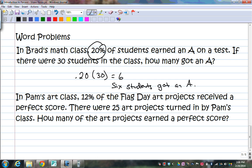All right. Now, in Pam's class, 12% of Flag Day Art Projects received a perfect score. There are 25 students in that class or 25 projects. So, how many of them received a perfect score? I would change this to a decimal and times 25. And then I would get 3. And I would say, 3 projects got a perfect score.